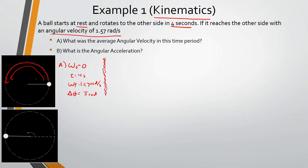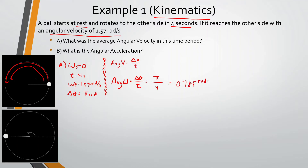This looks like a bunch of mumbo jumbo at the beginning, but it's the same thing as kinematics — instead of omega it's v-initial, instead of omega-final it's v-final, instead of change in theta it's change in x or displacement. We know average velocity equals displacement over time, so average angular velocity equals change in theta over time. Change in theta is π radians over four seconds, which gives us π divided by 4 = 0.785 radians per second.